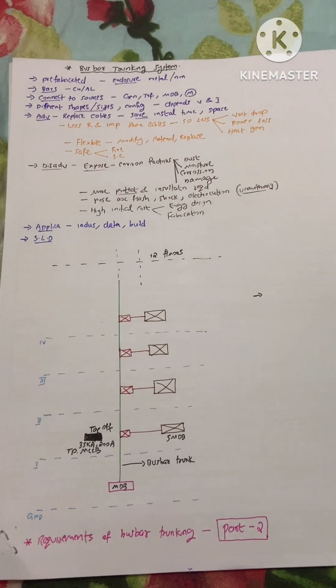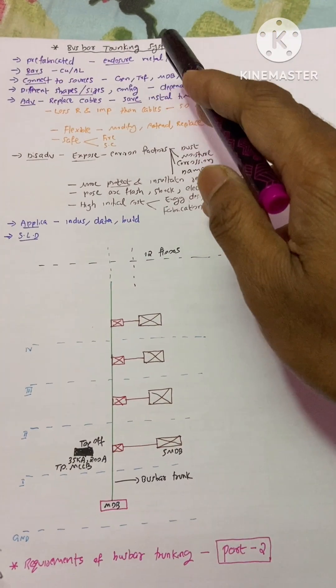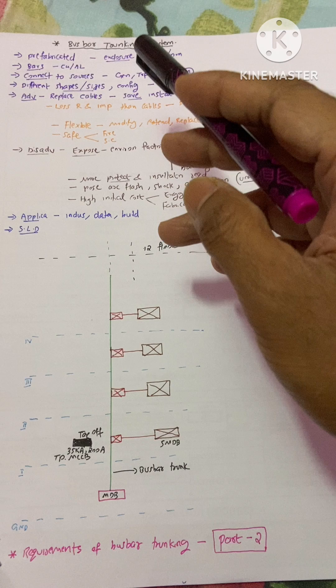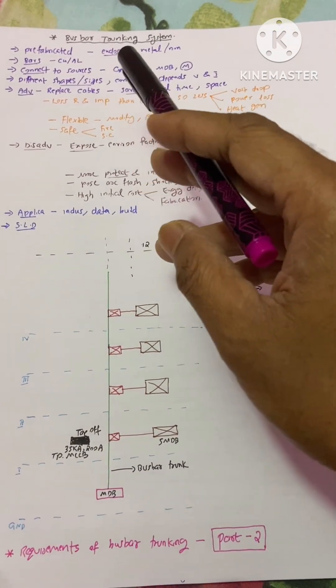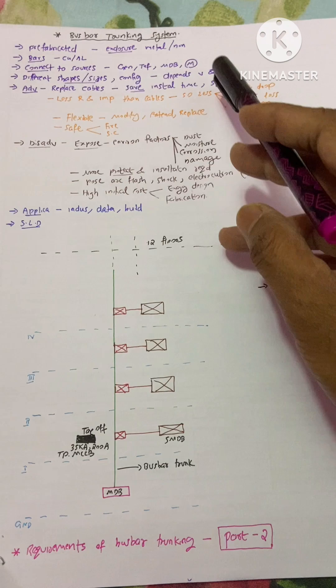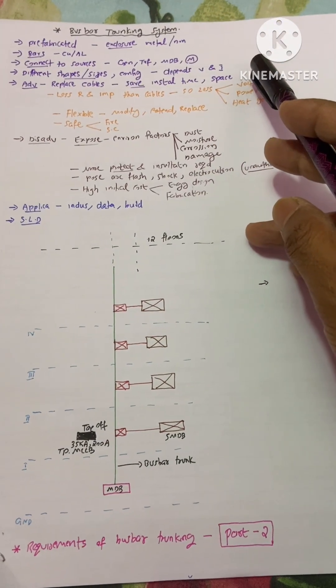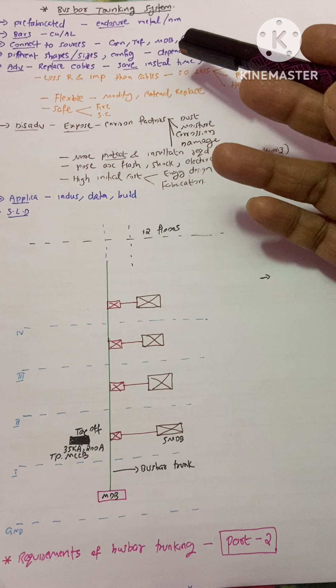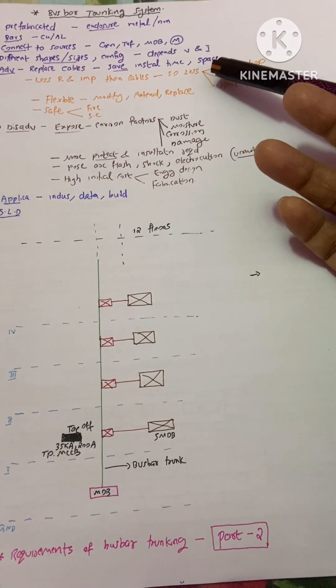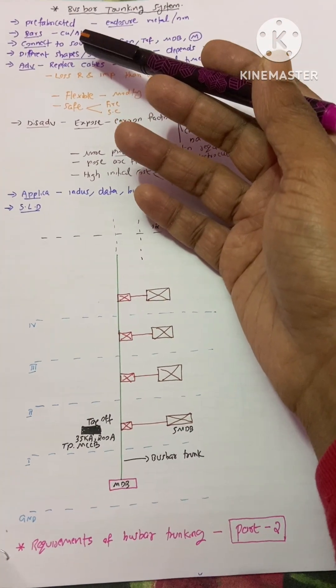Hi guys, today our topic is bus bar trunking system. It is a prefabricated system that will deliver electric energy to the entire construction. Its enclosure would be in metal or non-metallic, and in which material.